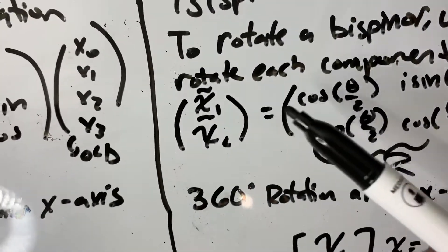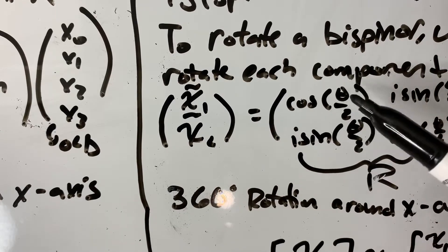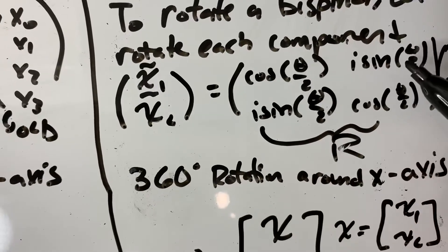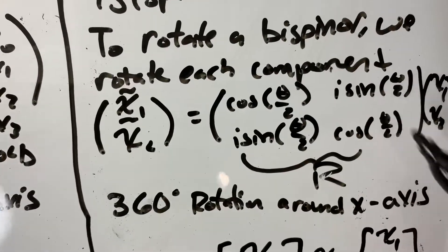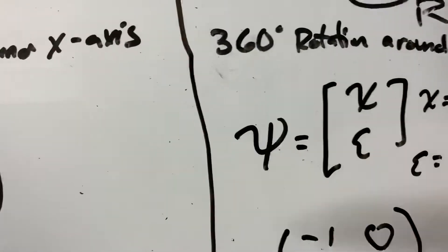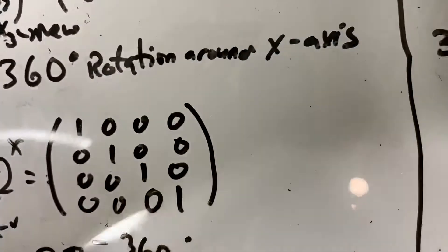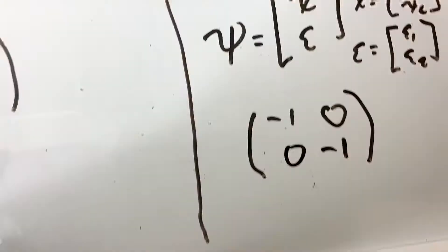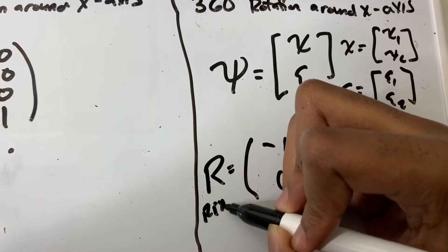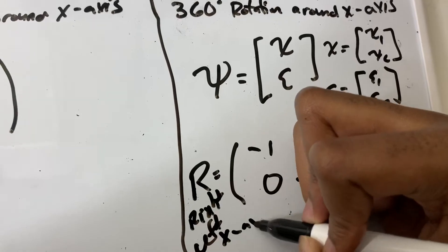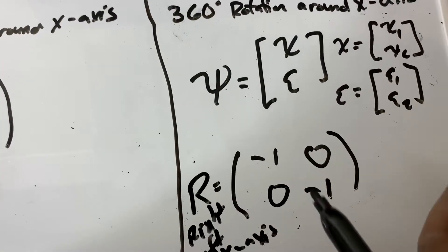What about the left chiral spinor? Let's do the same thing. We have 2π, but now it's 2π over 2, which is π. Cosine of π is going to be minus 1, and sine of π is 0. So we get minus 1, 0, 0, minus 1. Here is the rotation matrix for the right chiral spinor and left chiral spinor about the x-axis — notice how it differs: here we have 1s all along the diagonal, but for the spinor we have minus 1s instead.